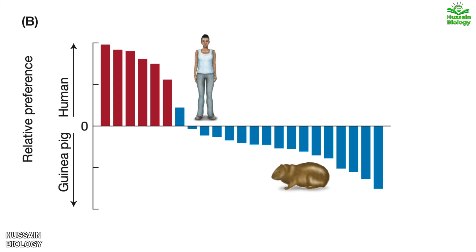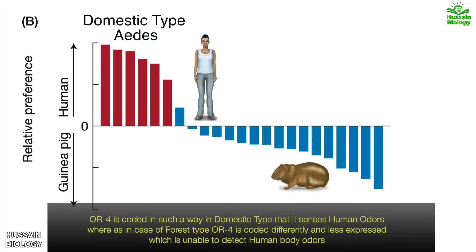The red bars represent the domestic population of Aedes. All colonies of the domestic form shown in the red bars prefer human odor.